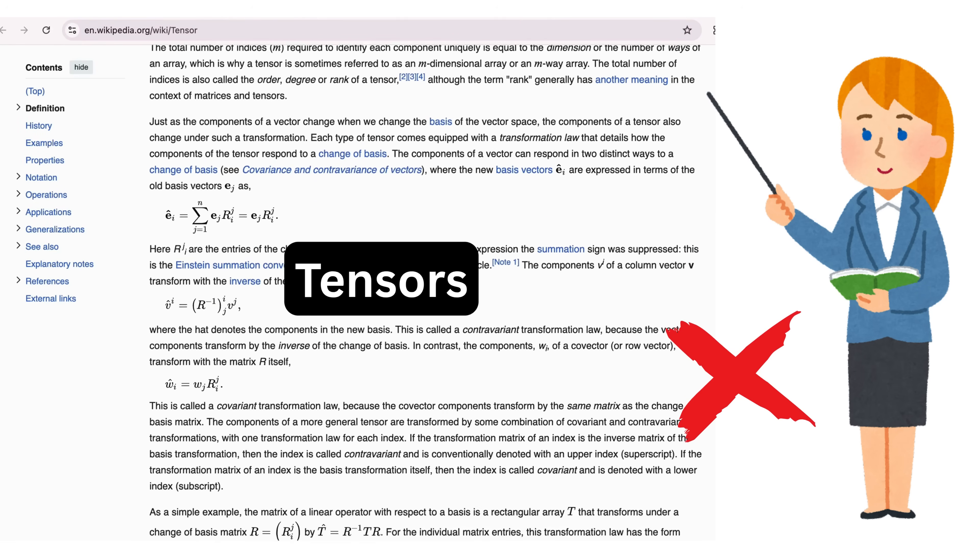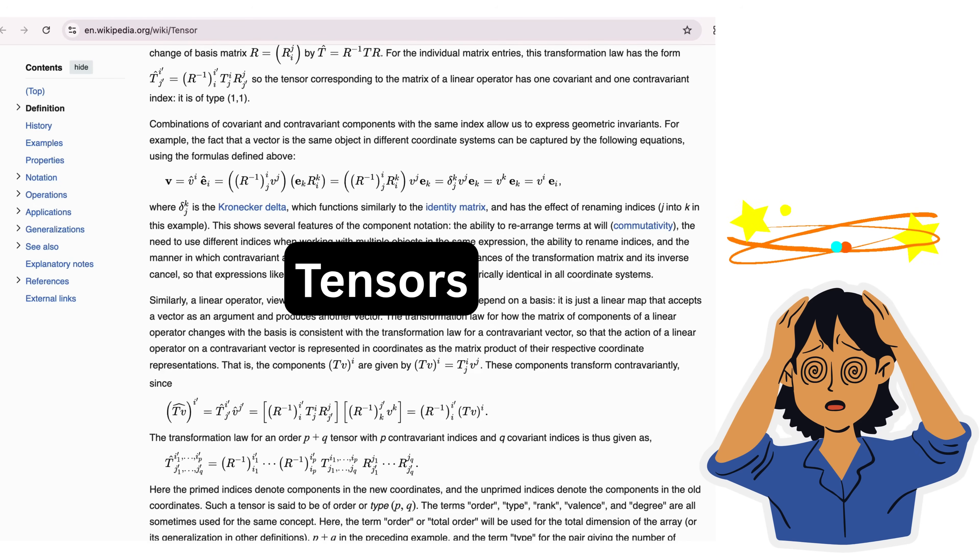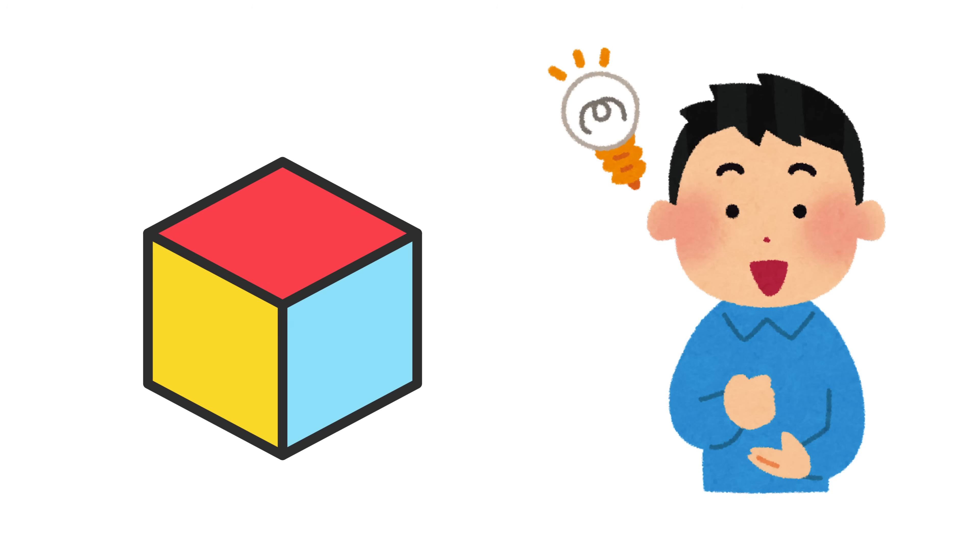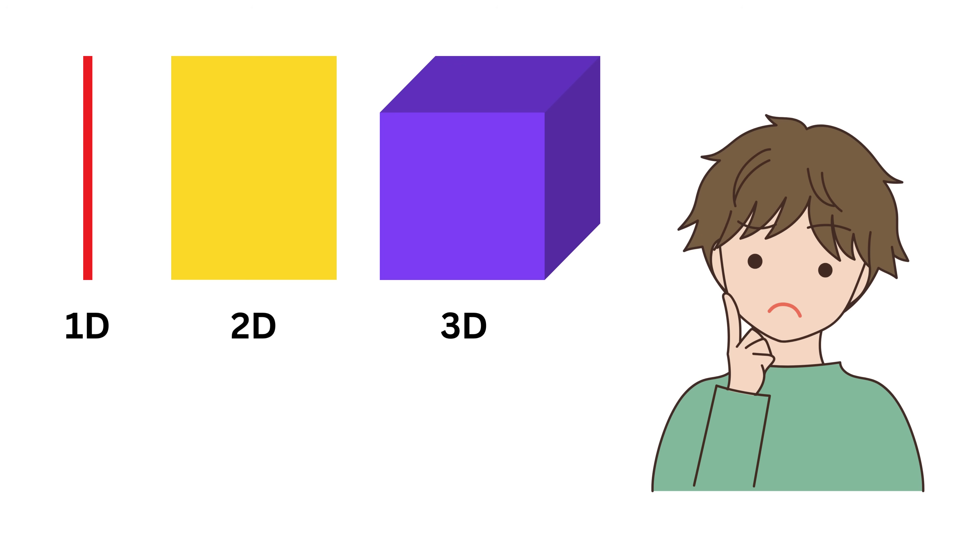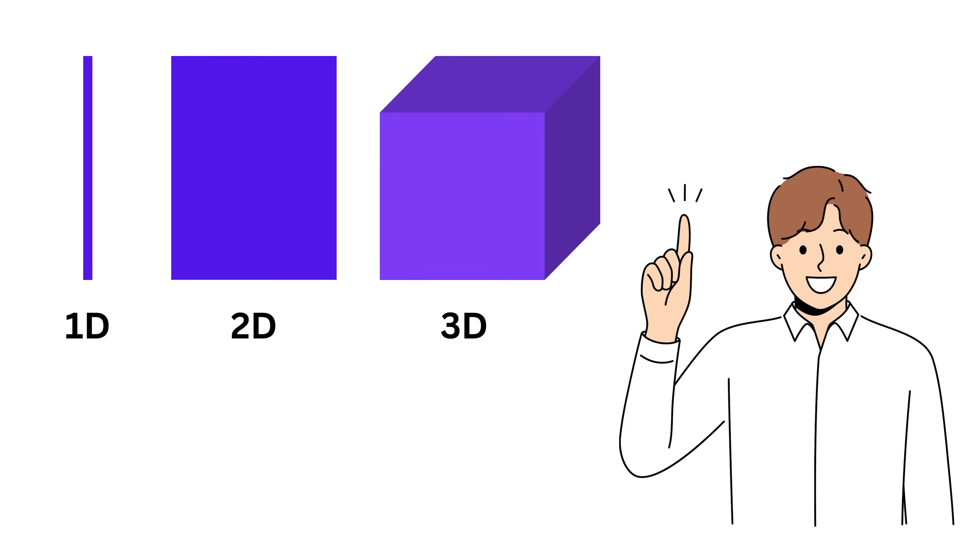I won't be explaining tensors in a formal mathematical way with strict definitions because that often creates more confusion than clarity for beginners. Instead, this video will be a broad overview on tensors, and the goal is to build a clear, visual, and intuitive understanding that might actually stick with you. There are hardly any videos on the Internet that connect all examples related to tensor dimensions using a single consistent example. Many of them explain tensors beautifully using different examples for each dimension, but I think the intuition gets even stronger when we stick to one consistent example all the way through.